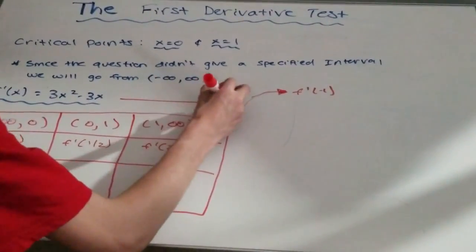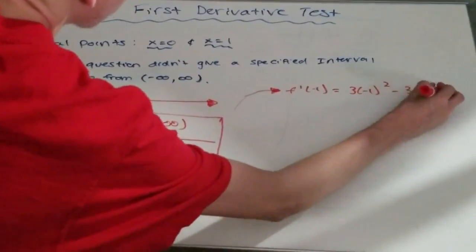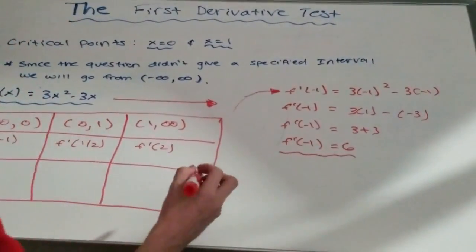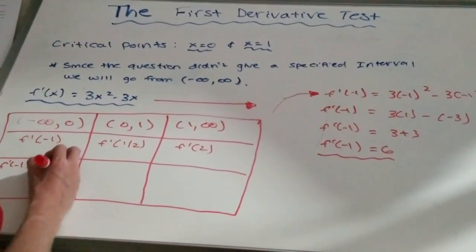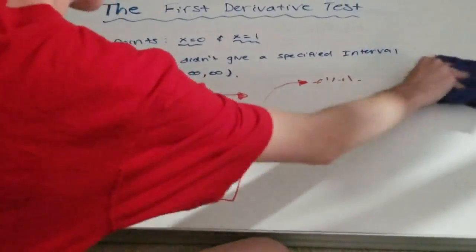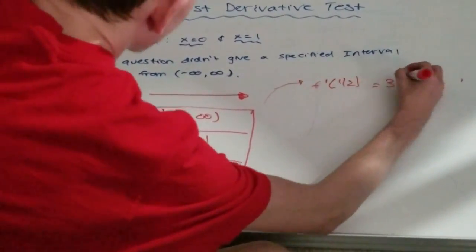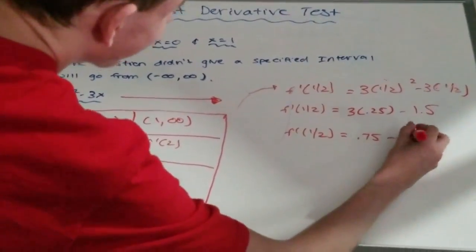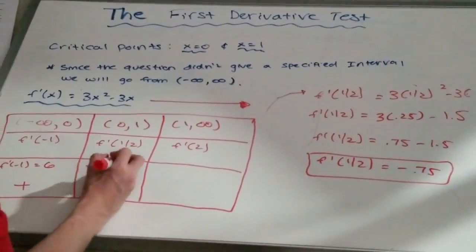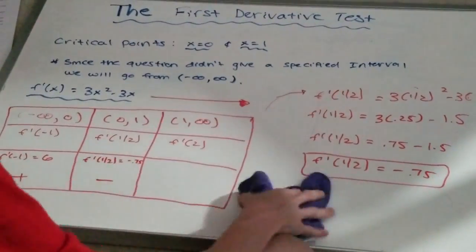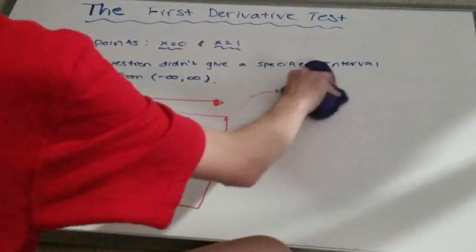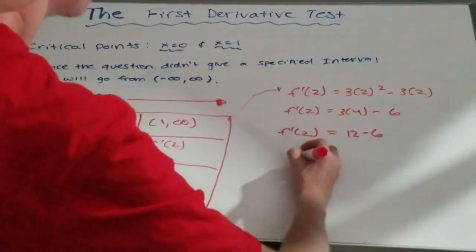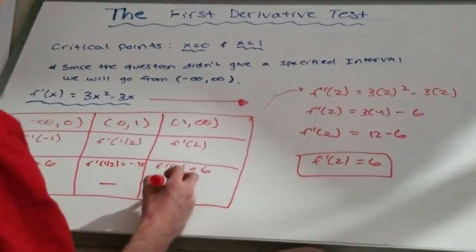After finding all intervals, we pick a number in between them to test inside our derivative. For negative infinity to zero, we pick -1. For the second interval, we pick 1/2, and for the third interval, we pick 2. We plug those numbers into the derivative function to see if the result is positive or negative. If negative, the function is decreasing; if positive, the function is increasing. The first interval is positive, the second is negative, and the third interval is positive.